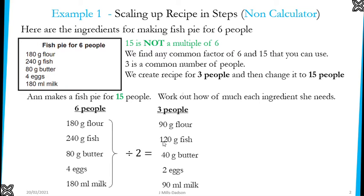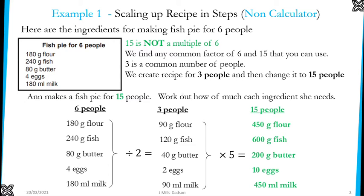Now from 3 people, it's easier to create 15, because 3 times 5 is 15. Therefore multiply each of these ingredients by 5, and that gives you the final answer for 15 people — the ingredients for the recipe for 15 people. As you can see, this is more than what we had before because we are scaling it up, but we did it in steps. We went down first to 3, and then up to 15.